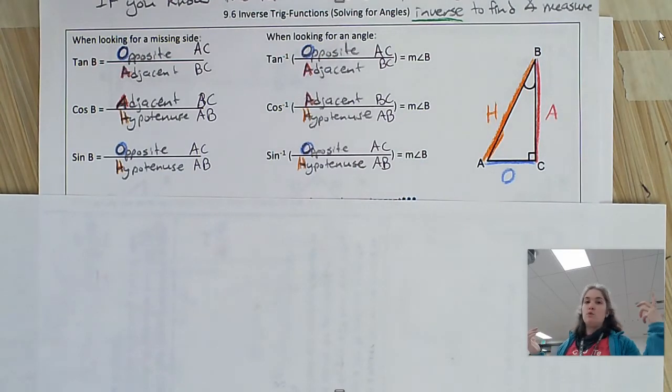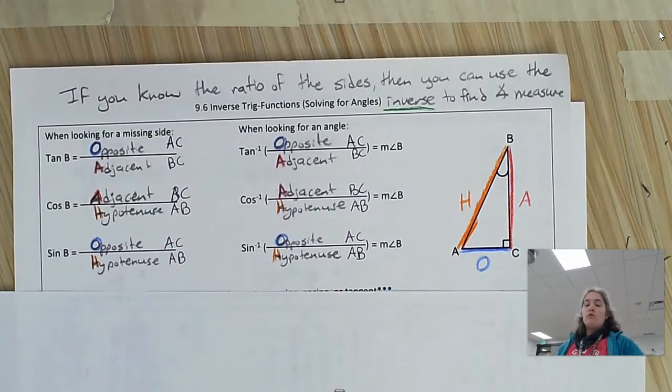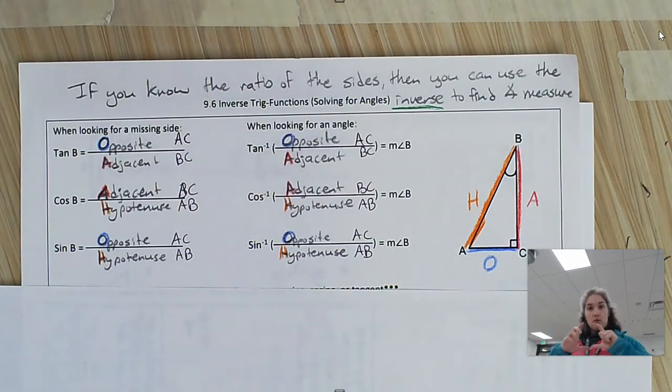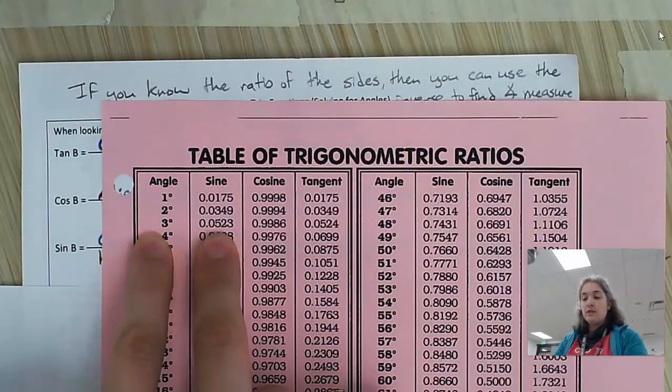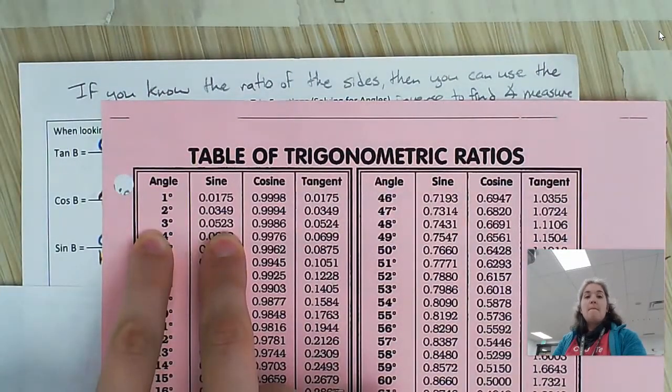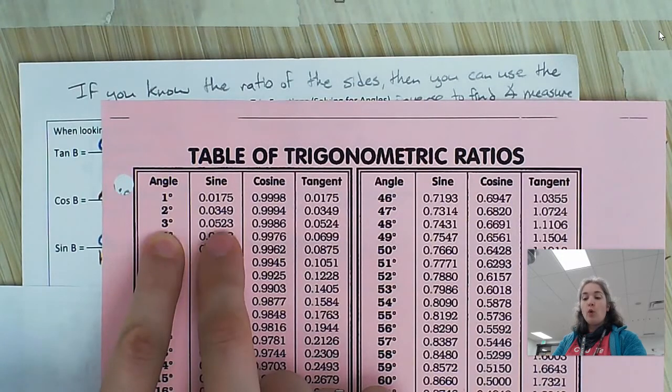Well, what if you know the sides but you don't know the angle, and you want to figure out what the angle is? So remember, all of the ratios, all these trig functions, the ratios are unique for angles. What do I mean by that? I mean that sine of 3 degrees is 0.0523.